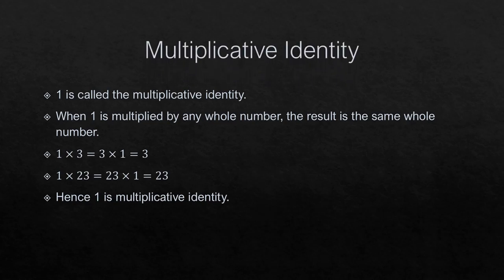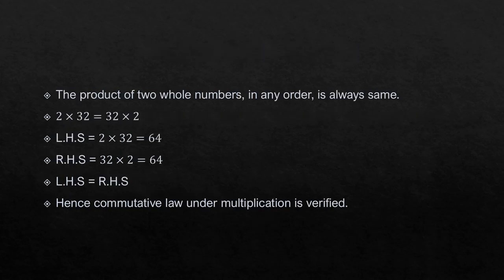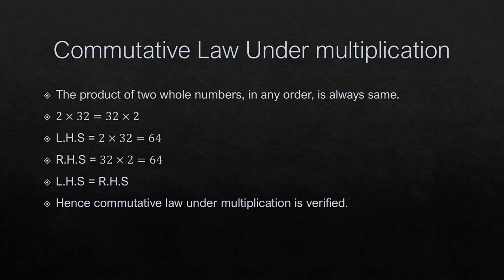What is multiplicative identity? 1 is called the multiplicative identity. When 1 is multiplied by any whole number, the result is the same whole number. For example, 1 into 3 is 3, and 3 into 1 is also 3. 1 into 23 equals 23 into 1, which equals 23. Hence 1 is the multiplicative identity.